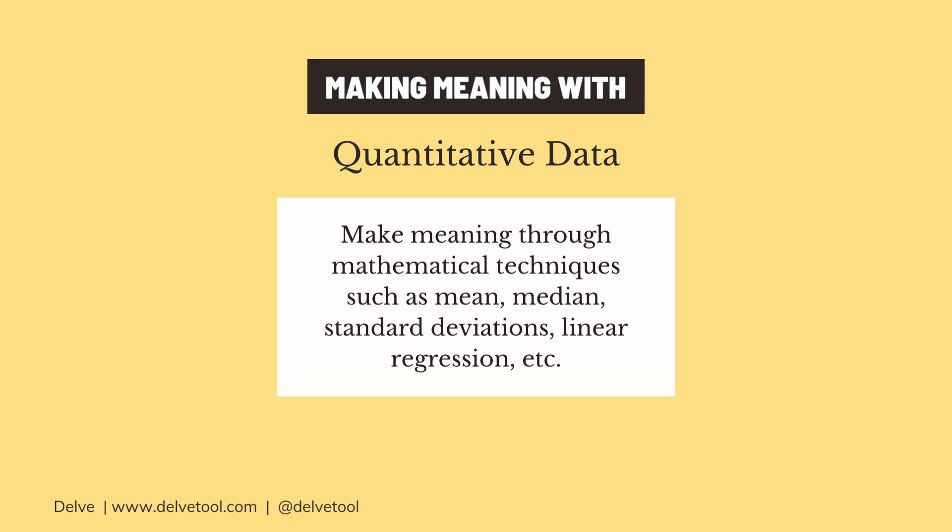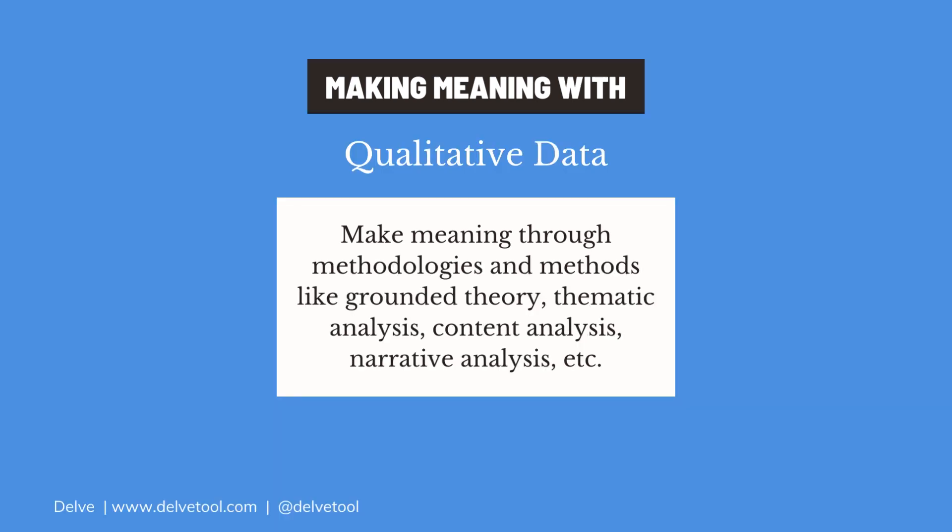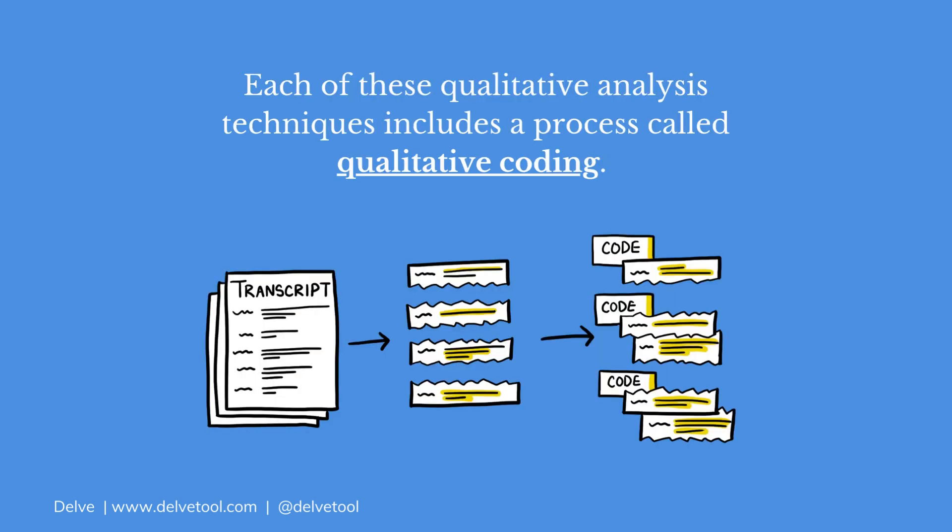These methods, however, cannot be used on qualitative data, which has its own forms of analysis to extract meaning. For qualitative data, you can use methodologies and methods such as grounded theory, thematic analysis, content analysis, narrative analysis, and other techniques. Each of these qualitative analysis techniques includes a process called qualitative coding.